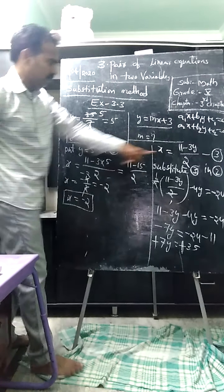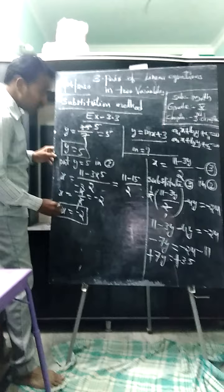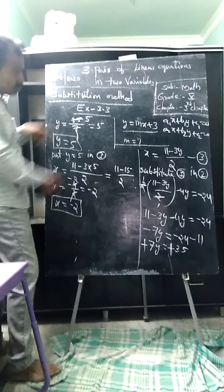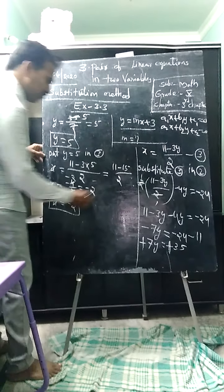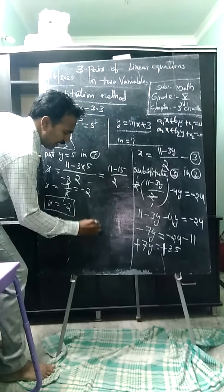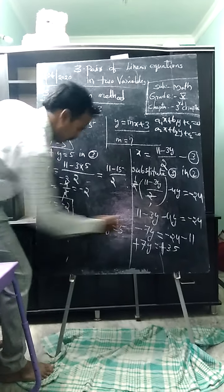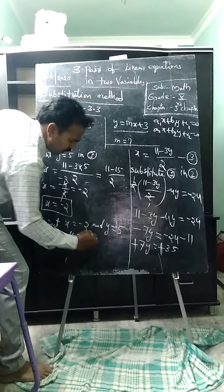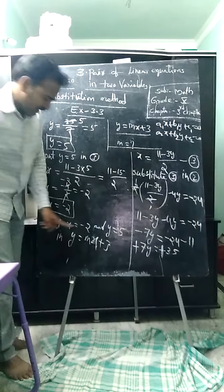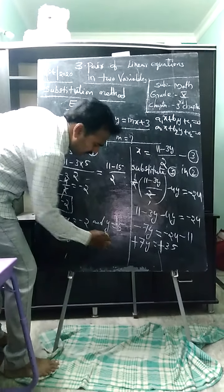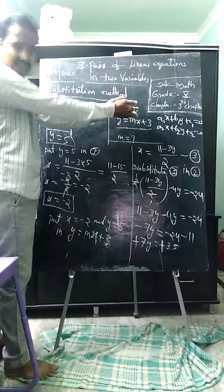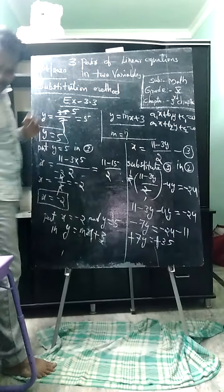So x equals minus 2 and y equals 5. We require the m value. If the same solution — x equals minus 2, y equals 5 — is also a solution of y equals mx plus 3, then we substitute: put x equals minus 2 in the x place and y equals 5 in the y place. We will get a linear equation in terms of m, and then we find m.